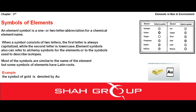117 ya 118 elements ko humne symbols diye hain unki clarification aur identification ke liye, kyunki jab bhi koi chemical equation likhte hain to hum symbolic form mein likhte hain. Is ke liye elements ke symbols required hote hain. Elements ko symbol dete waqt humne do baaton ka khayal rakha hai: kisi bhi ek element ka symbol doosre element ke similar na ho; pehla letter capital ho aur agar double letter dena pada hai to pehli letter capital aur baad wali letter small ho.